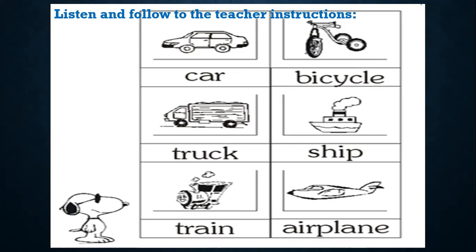We continue. Show me your yellow color. With your yellow color, circle the train — encerrar el tren con su color amarillo. Circle the train with yellow color. Now listen: mark the plane with purple color — marcar el avión con color morado. Mark the plane with purple color.